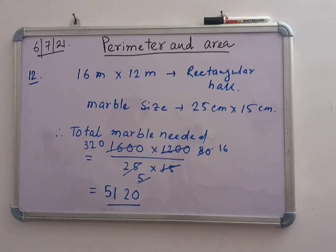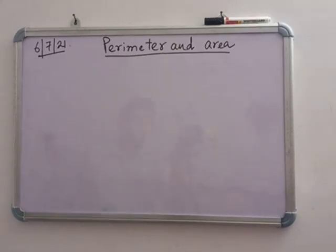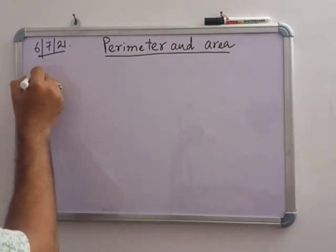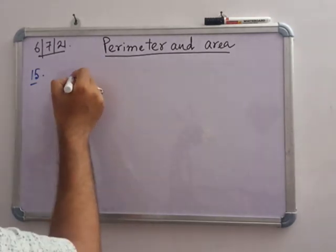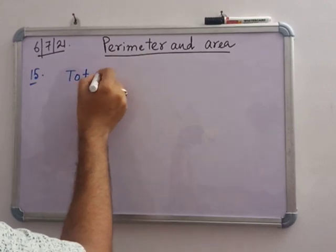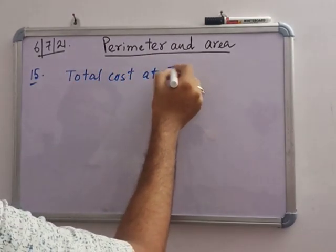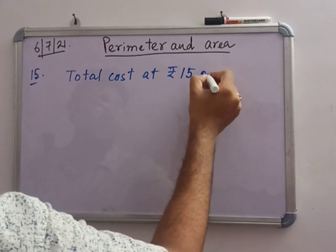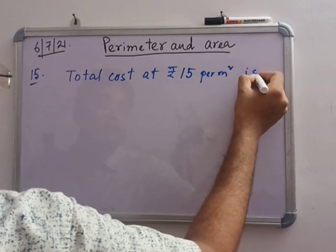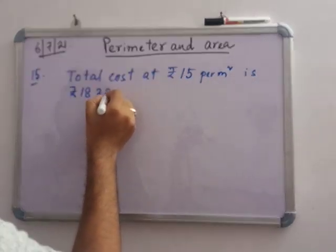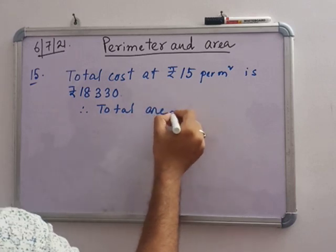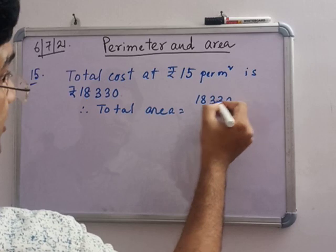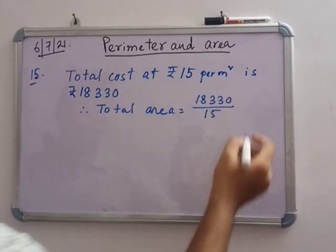Number 15. The total cost of cultivating a rectangular field at rupees 15 per meter square is rupees 18,330. So total cost at rupees 15 per square meter is rupees 18,330. So total area is 18,330 by 15.